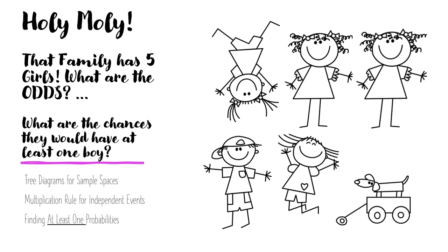So basically what's the probability of them having at least one boy? Five girls — that's a lot of girls.